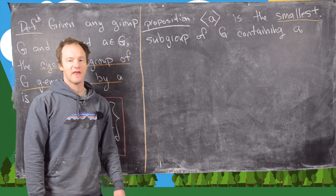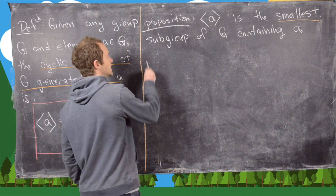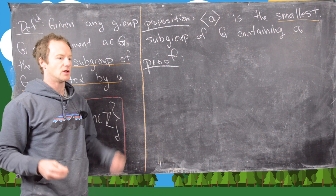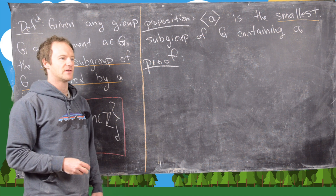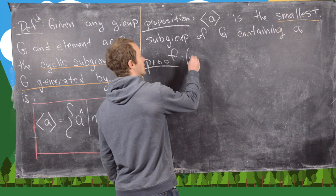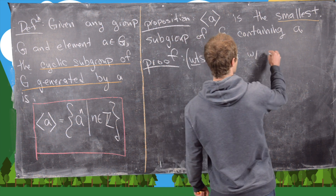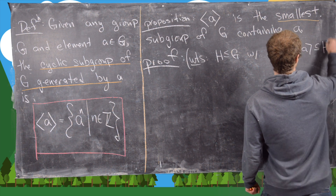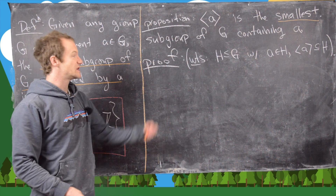The next result we want to prove is that the cyclic subgroup <a> is the smallest subgroup of g containing a. When talking about smallest in terms of subgroups, the ordering is not given by the number of elements but by inclusion. We want to show that if h is a subgroup of g with a an element of h, then the cyclic subgroup <a> is contained in h.